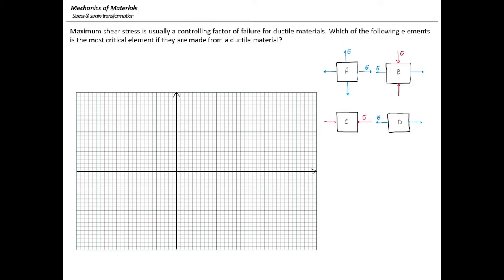Let's draw the Mohr circle for element A. Since the shear stresses are zero, the elements shown represent the principal plane, so sigma_p1 = sigma and sigma_p2 = sigma as well. To make it clearer, I'll assume sigma is 15, so the first principal stress would be 15 and the other would also be 15.